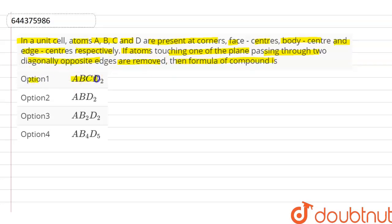Option first: ABCD2. Option second: ABD2. Option third: AB2D2. And option fourth: AB4D5.